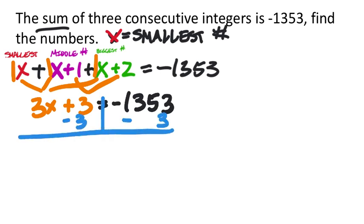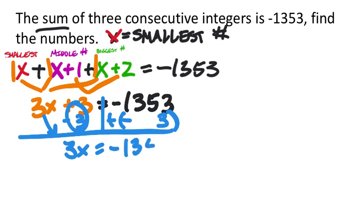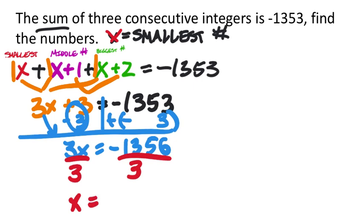Subtracting 3 from both sides: 3x = negative 1,353 minus 3, which is negative 1,356. Then dividing both sides by 3. I know my answer is negative. Using long division: 3 goes into 13 four times (4×3=12), remainder 1; drop the 5 to get 15 (3 goes in 5 times); drop the 6 (3 goes in twice). So x = negative 452.